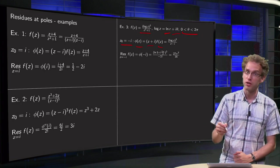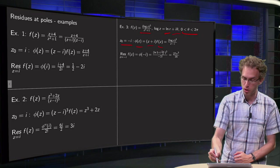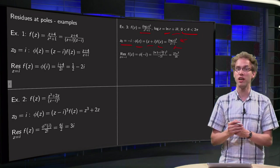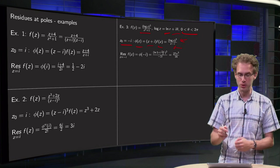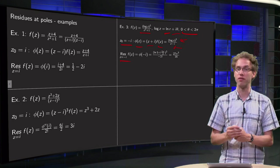Our phi of z becomes the log of z cubed and the z minus i is left. Z plus i factors cancel out. Then, the residue at z equals minus i of f of z.